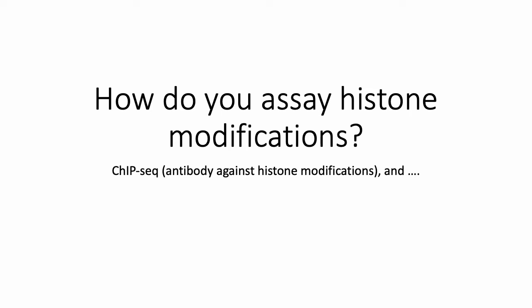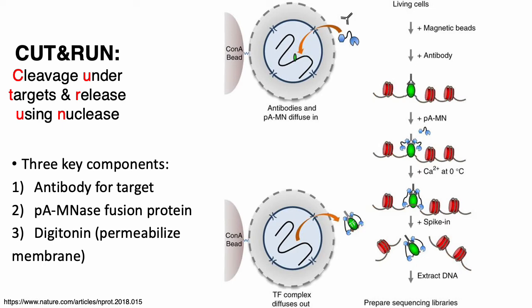Now we'll say a few brief words about assays used to identify the locations of histone modifications across the genome. Cut-and-run is a relatively new technique first developed in 2017 that will hopefully replace ChIP-seq as the go-to assay for antibody-based sequencing. There are two key components: first, you need an antibody for your target of interest, just like ChIP-seq; and second, you need a fusion protein consisting of protein A, which binds most antibodies strongly, and MNase, which is a nonspecific endo- and exonuclease.